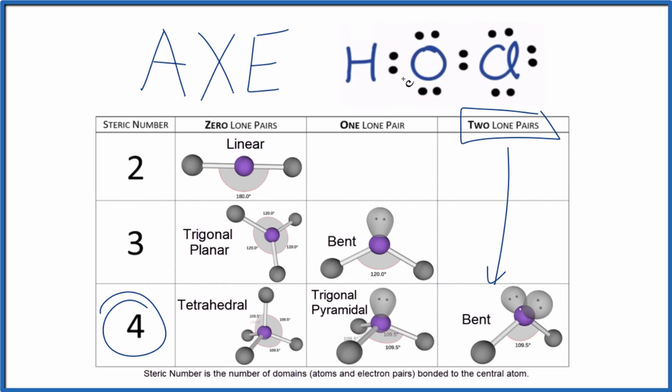So A, that's the central atom. That's the oxygen here. X, the number of atoms bonded, 1, 2. And then E, the number of lone pairs, 1, 2. And we're talking about the central oxygen. We end up with AX2E2. You could look this up on a table, and you would find out that it is a bent molecular geometry, just like we found before.